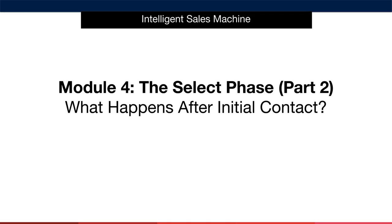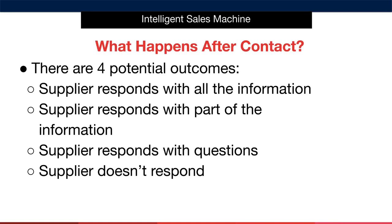When you contact your supplier there are four potential outcomes that may occur once you make your initial contact with them. Scenario one: the supplier responds with all the information you require. Scenario two: the supplier responds with part of the information. Scenario three: the supplier responds with questions. Scenario four: the supplier doesn't respond at all. Let's look into each of these and give you specific strategies to use depending on what happens.